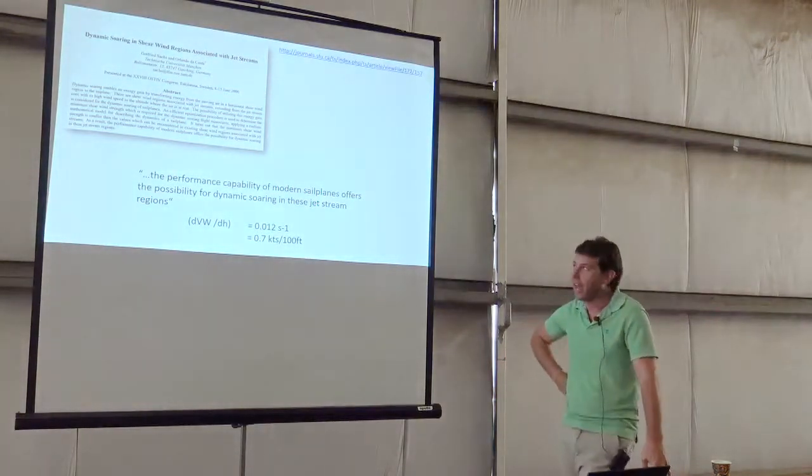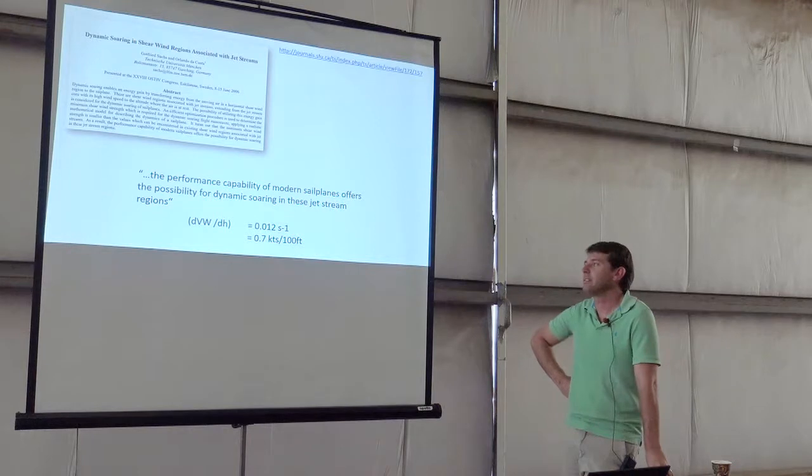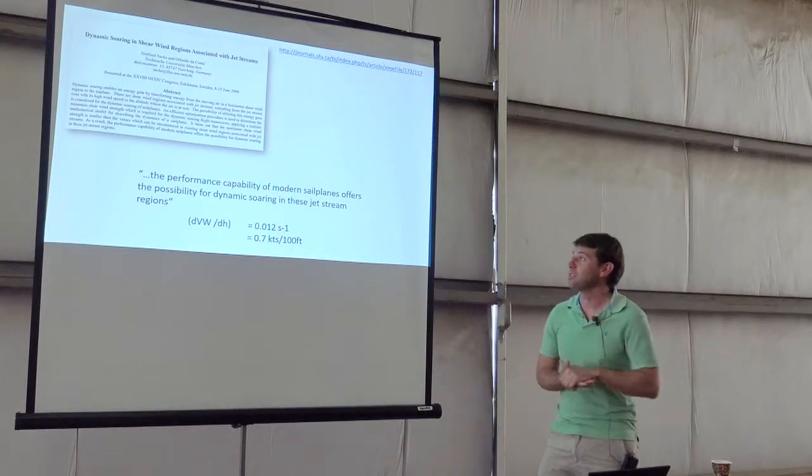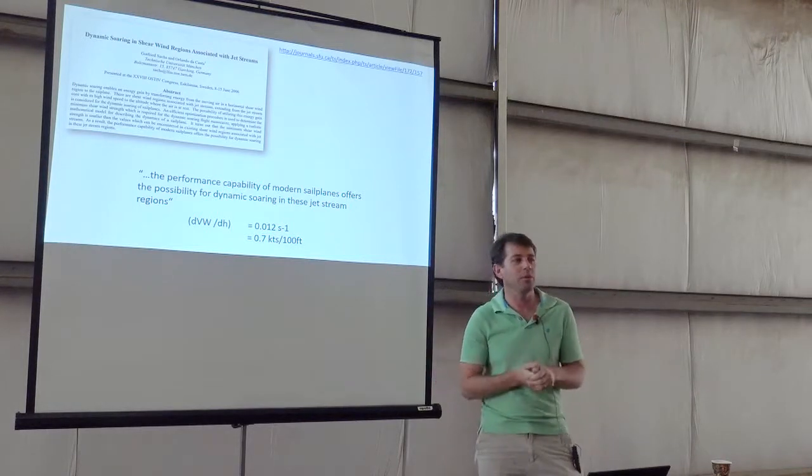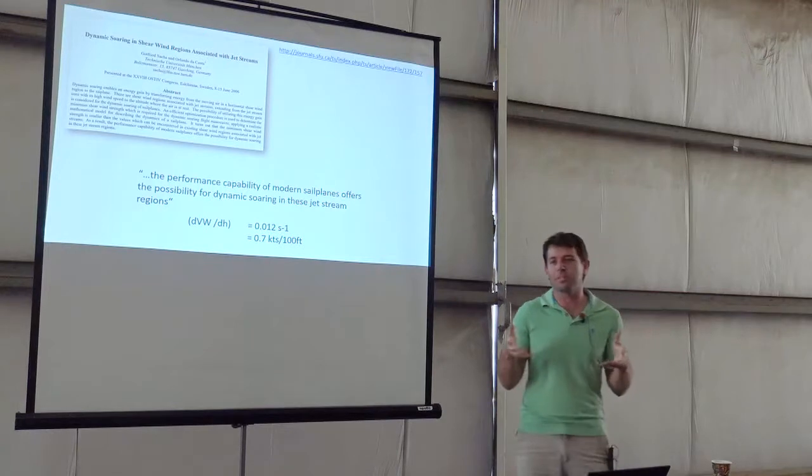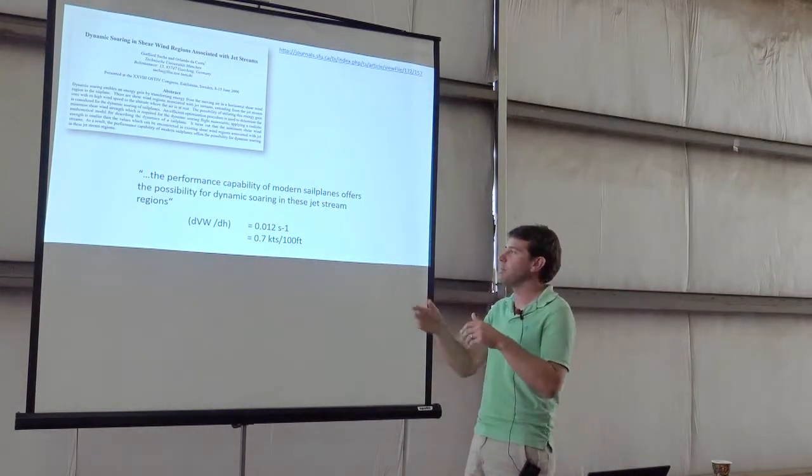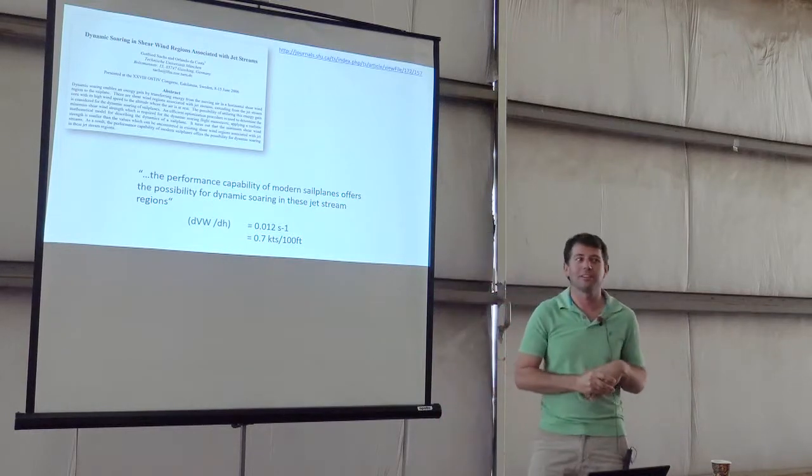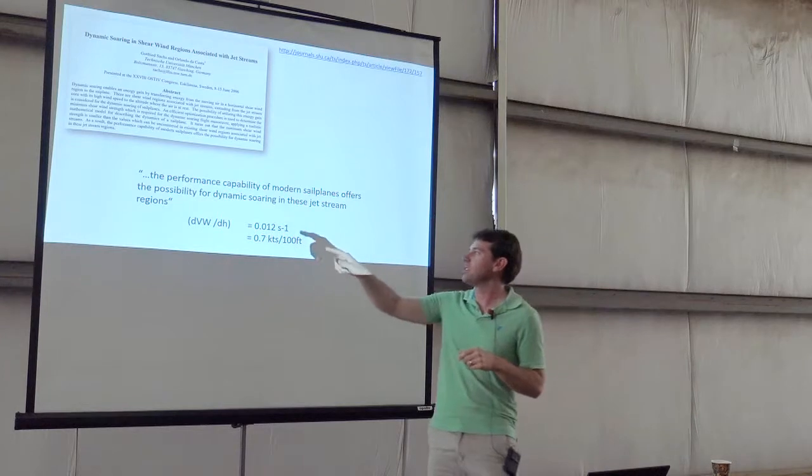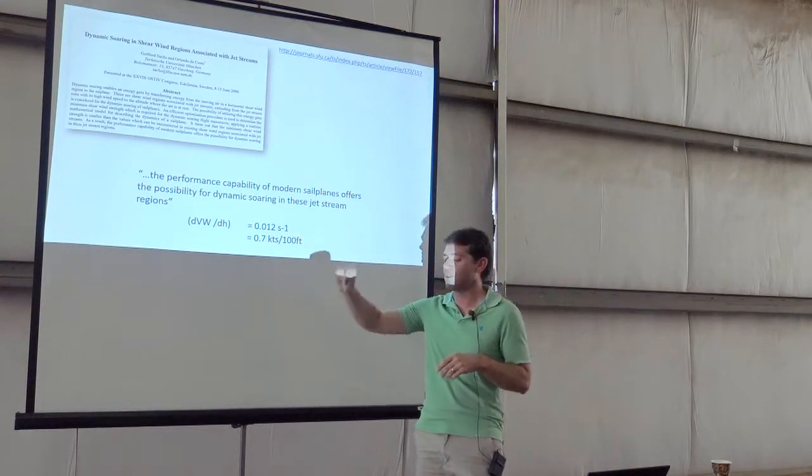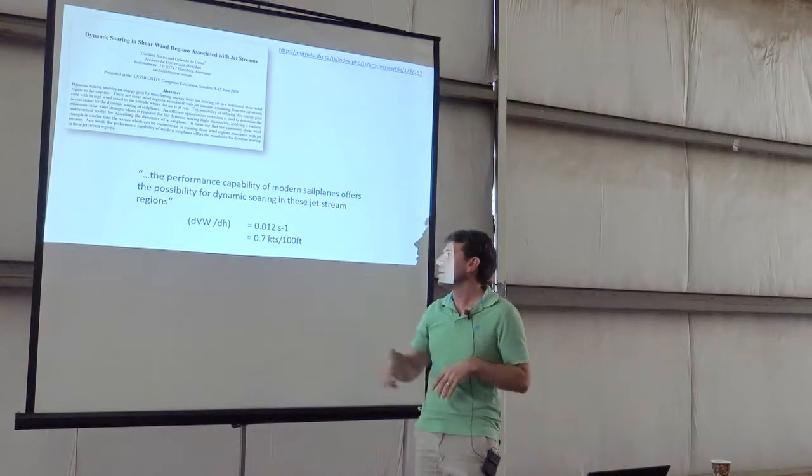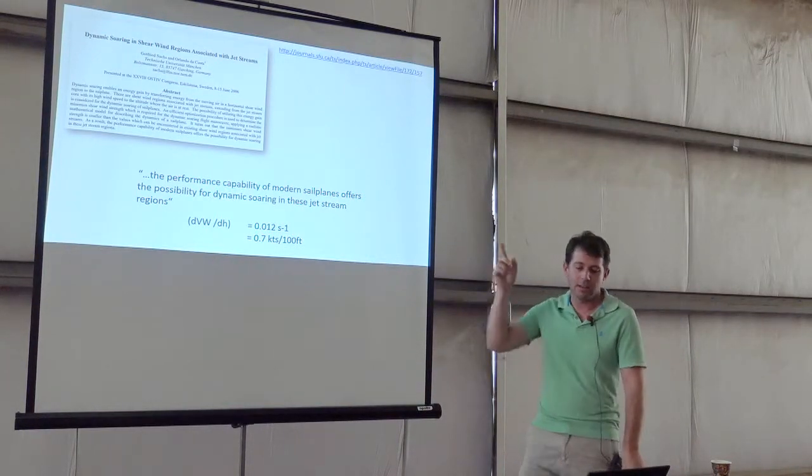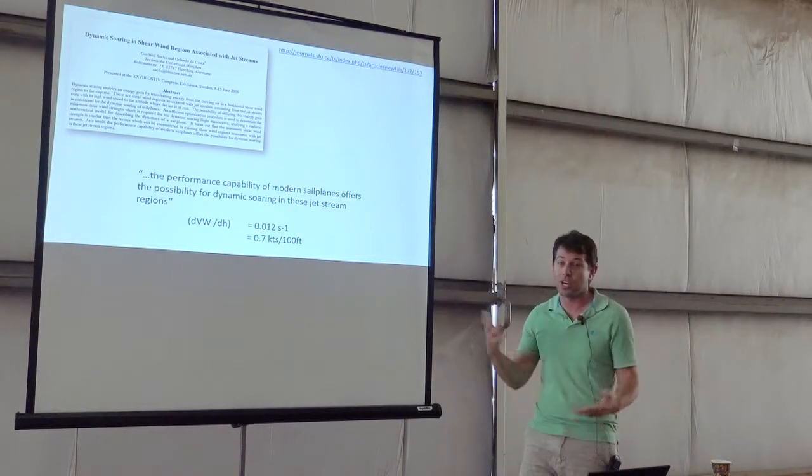Fortunately, some guys have written papers on this. This paper, back from 2006 by Sachs and Costa, is on dynamic soaring in the shear wind regions associated with the jet stream. These guys went and did, in this paper, they took an ETA sailplane, and they did the mathematical calculation to say, with this high-performance sailplane and the wind gradient that we see in the jet stream, would the glider be able to fly? And boom, the performance capability of modern sailplanes offers the possibility of dynamic soaring in these jet stream regions. That's pretty exciting. One thing that came out of that paper is they talk about how much shear you need. This is the shear value, which in a meteorological world is per second, which to make more sense in a pilot world is about one knot per 100 feet of wind shear is what the ETA glider needed to actually soar in the jet stream.